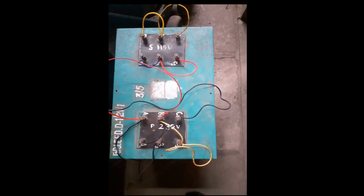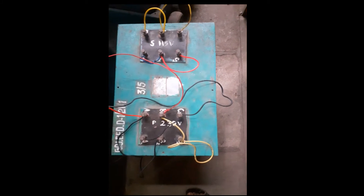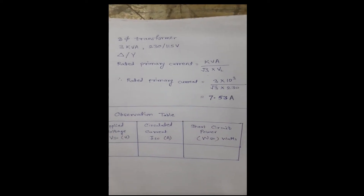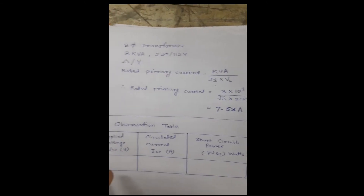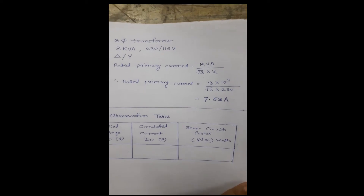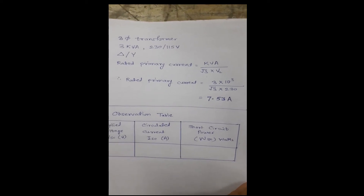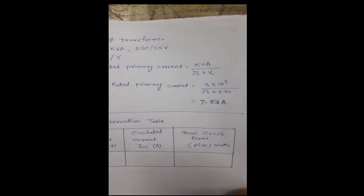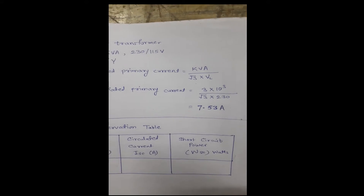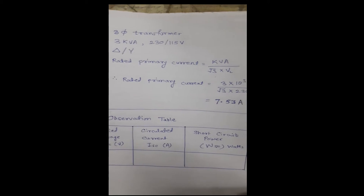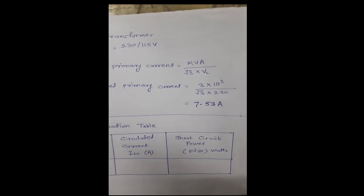As it is a short circuit test, the secondary terminals are short-circuited. For this 3 kVA three-phase transformer, to conduct this experiment we need to circulate rated current or a current below rated value during the short circuit. As per the given rating, the rated primary current is calculated for 3 kVA at primary voltage of 230 volts, giving a rated primary current of 7.53 amperes.